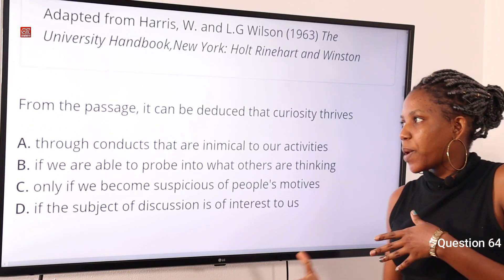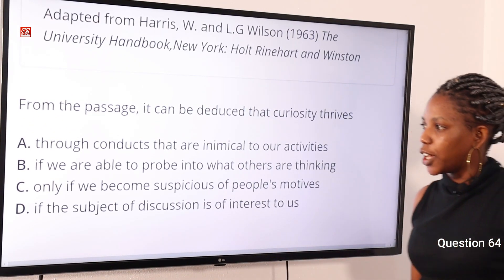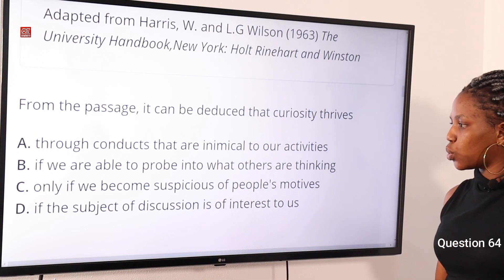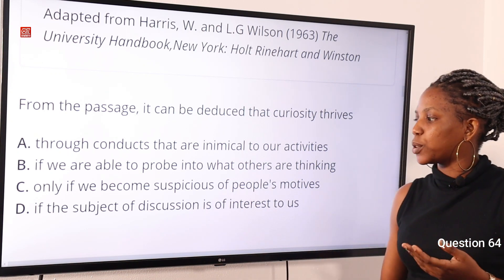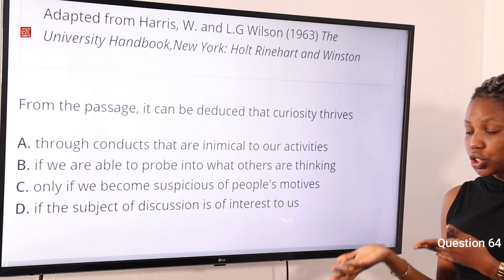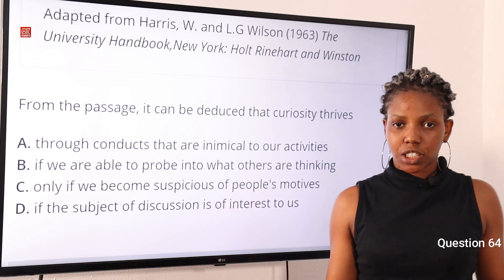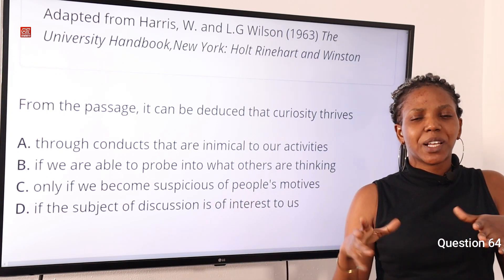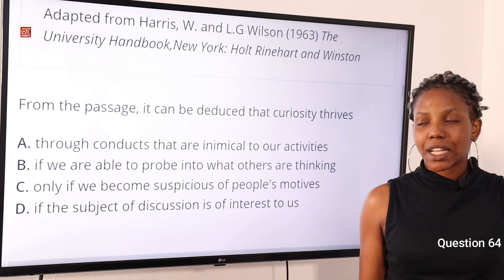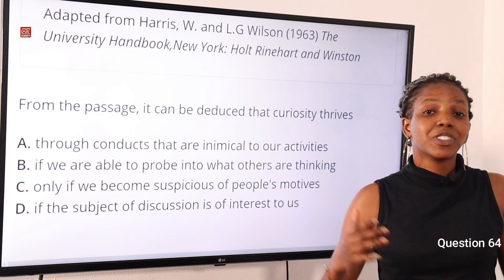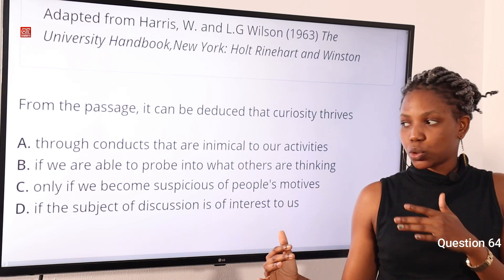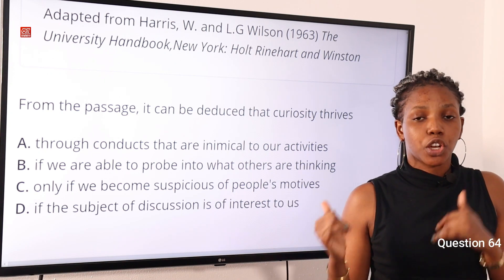Question 64: From the passage, it can be deduced that curiosity thrives — option A: through conducts that are inimical to our activities, option B: if we are able to probe into what others are thinking, option C: only if we become suspicious of people's motives, option D: if the subject of discussion is of interest to us. The answer is option C. Almost at the end of the passage, personal interest is not considered as pure curiosity, and from the beginning, suspicion is shown to stimulate curiosity. So option C is the correct answer.